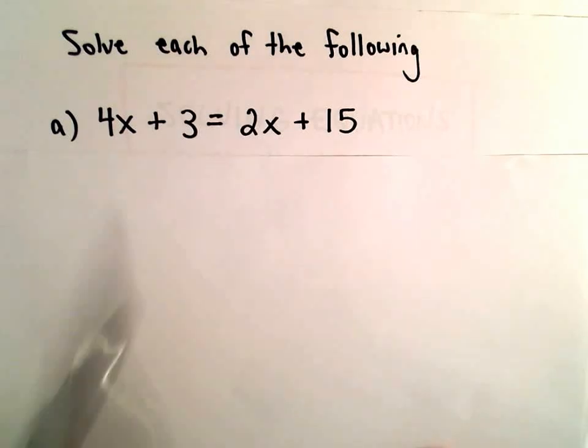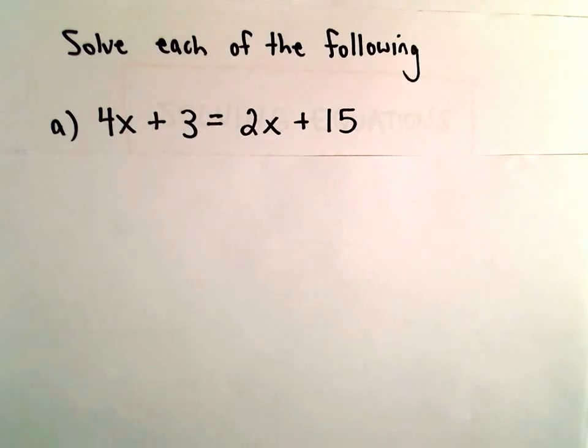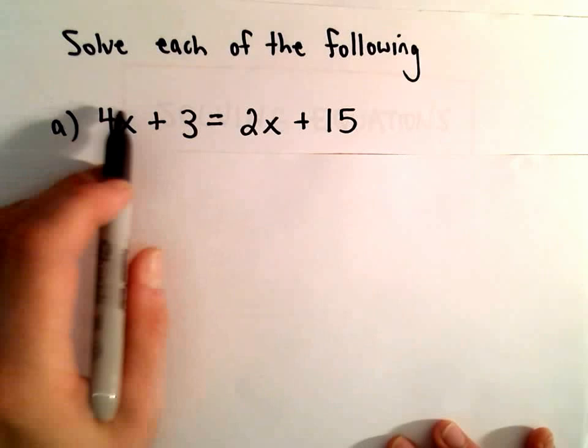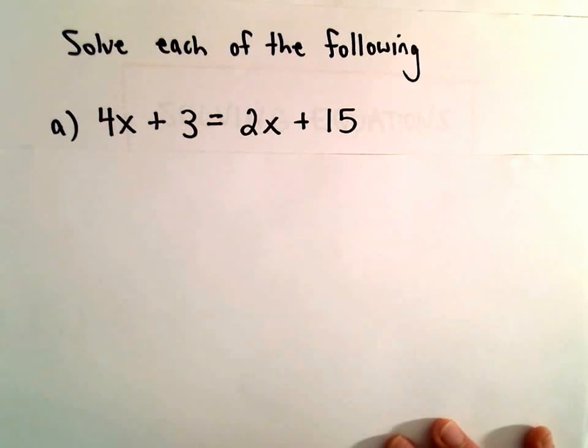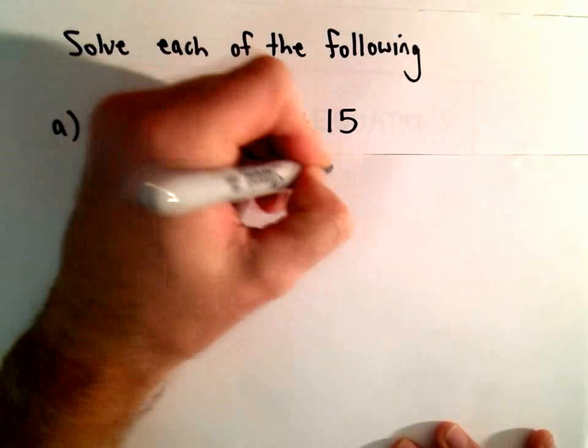So part A here, we have 4x plus 3 equals 2x plus 15. It doesn't matter what order you move things around. The first thing I'm going to do, I'm going to put all my variables on the left side and all the constants on the right side. So I'm going to subtract 3 from both sides.